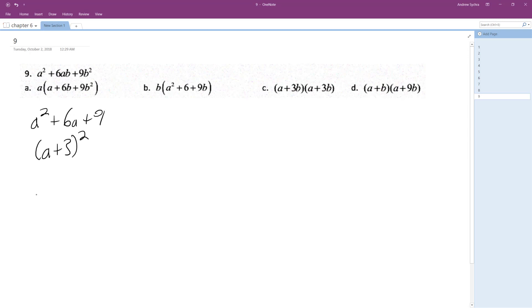But in this case we can do (a + 3b)² or just (a + 3b)(a + 3b), which looks a lot like this.